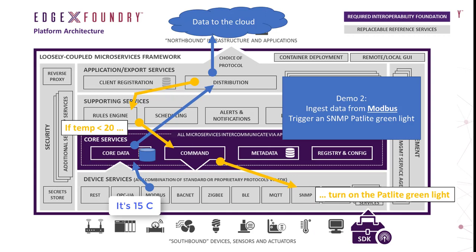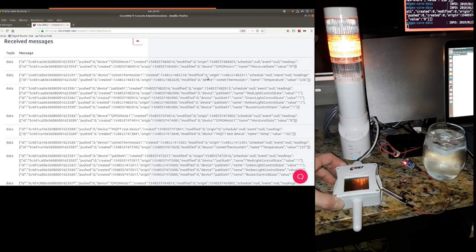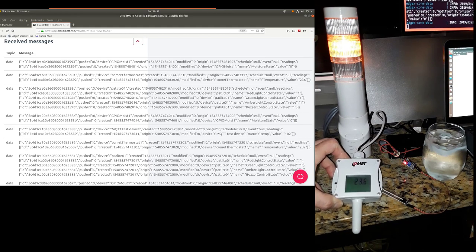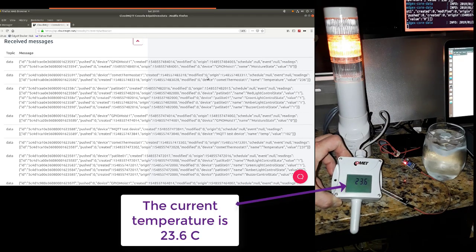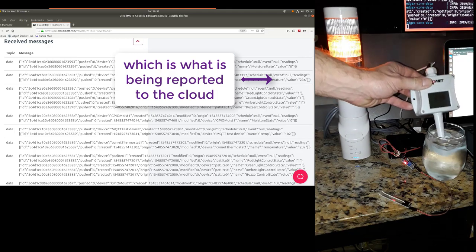In this next demo, I apply cold water to the Modbus temperature sensor. When the temperature reported from that sensor is greater than 20 degrees Celsius, it leaves the yellow pat light on, which is the current or default state. When the temperature goes below 20 degrees Celsius, EdgeX will detect this and turn on the pat light's green light, and it will also turn off the yellow light.